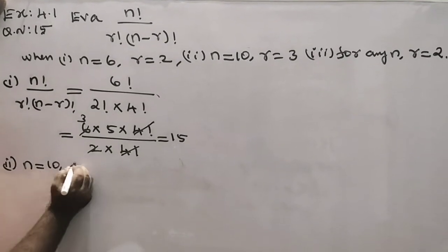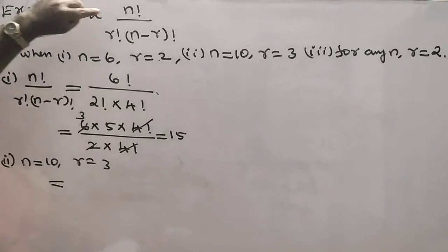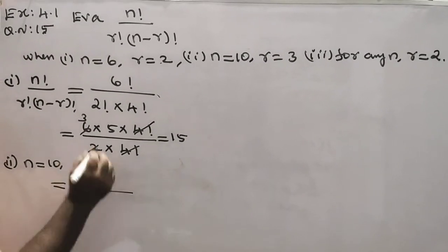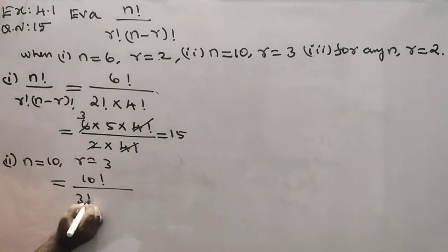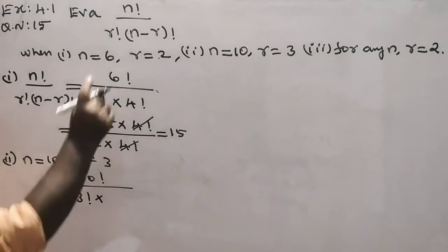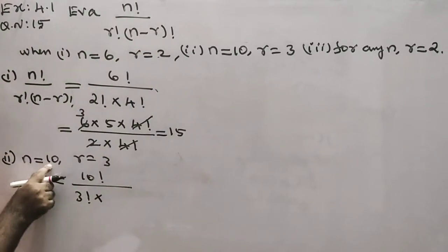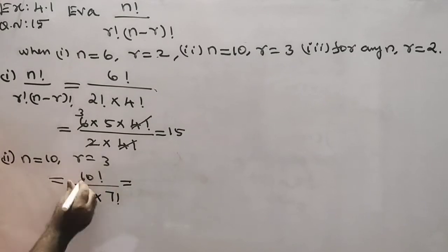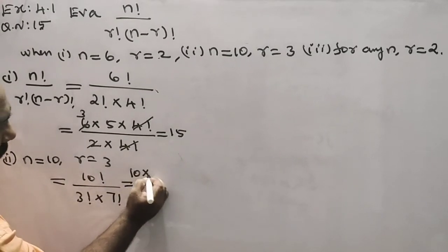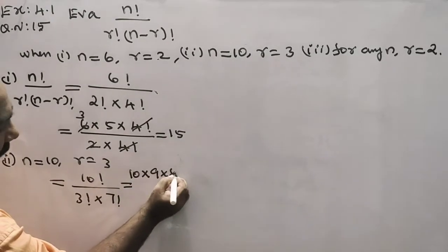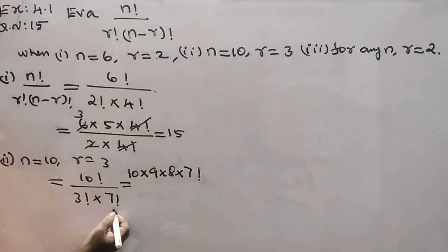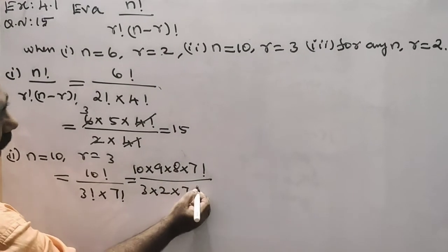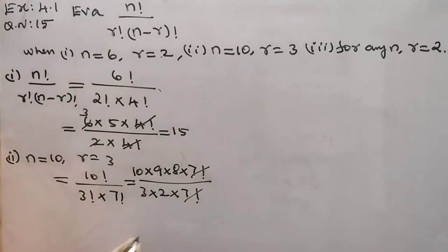Second problem: n equals 10 and r equals 3. The value of n factorial divided by r factorial into n minus r factorial equals 10 factorial divided by 3 factorial into 10 minus 3, which is 7 factorial. Expanding the numerator: 10 into 9 into 8 into 7 factorial, since the denominator has 7 factorial, they cancel.